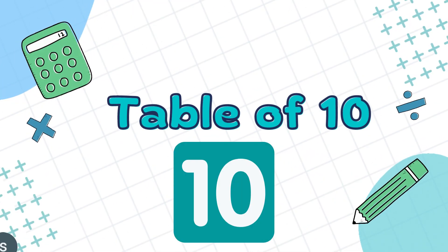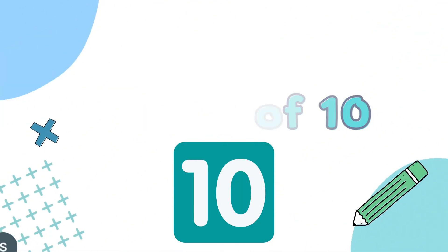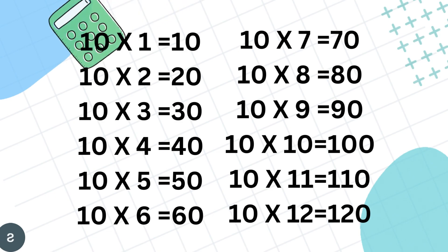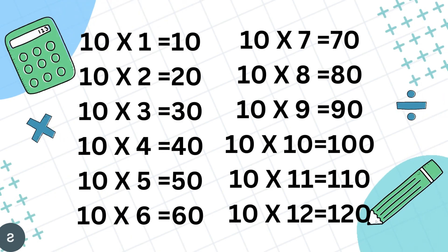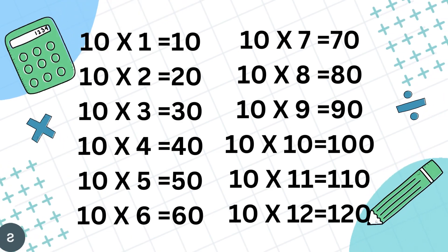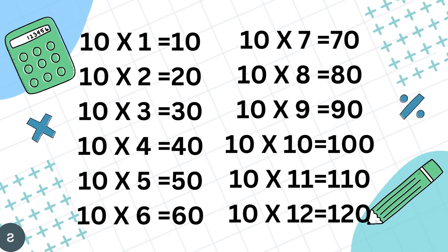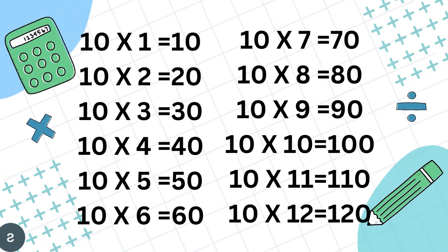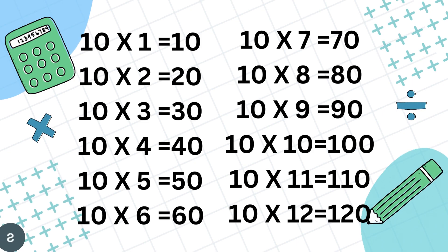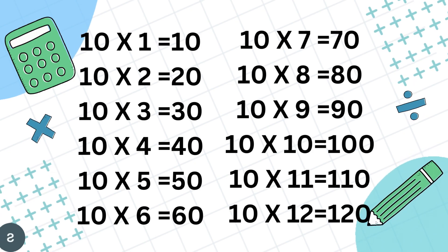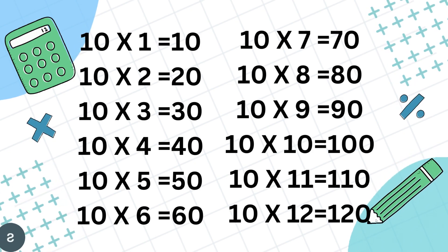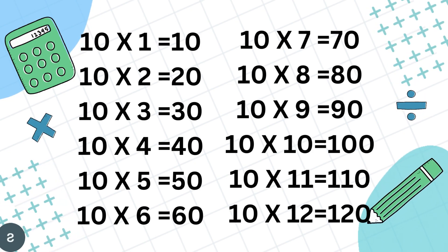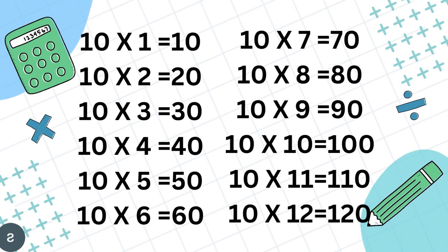Table of 10. 10 1's are 10, 10 2's are 20, 10 3's are 30, 10 4's are 40, 10 5's are 50, 10 6's are 60.